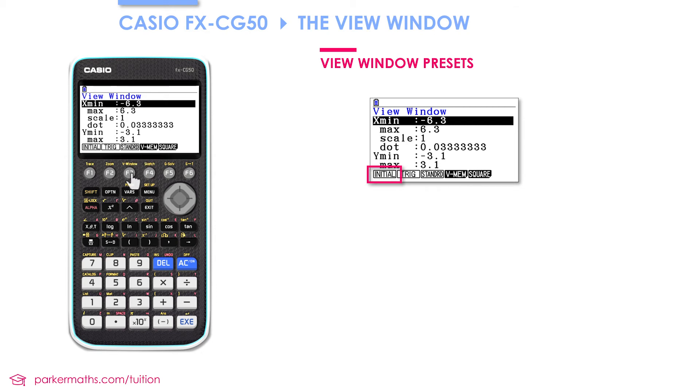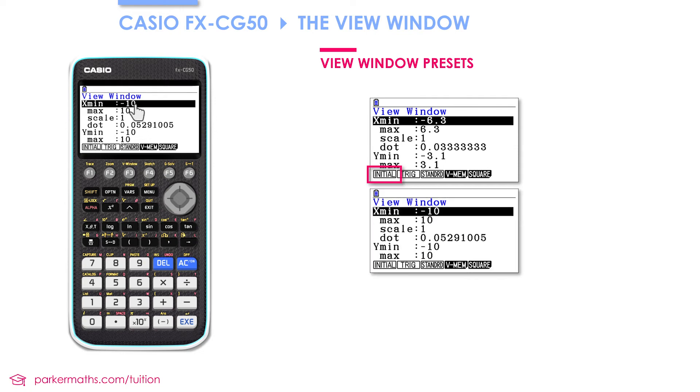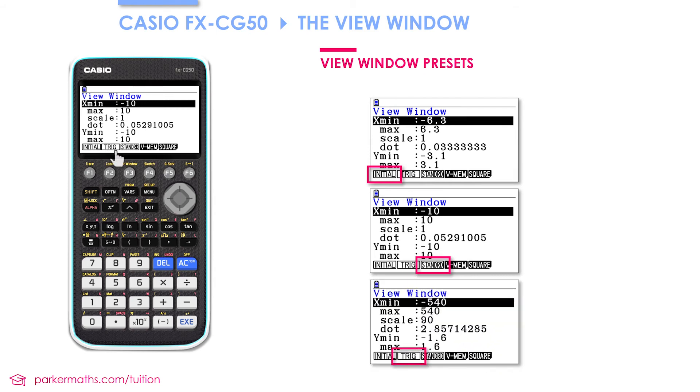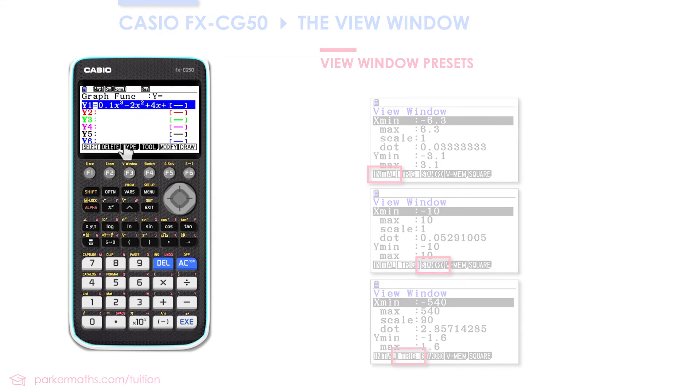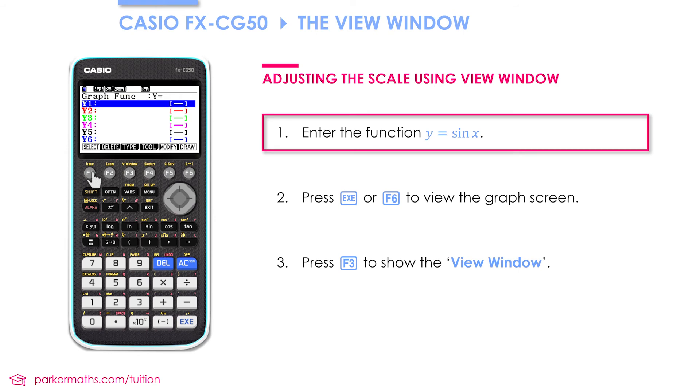And then there's a third one for trigonometry which we're going to have a look at for the next function. So let's exit the view window and I'm going to delete this function and replace it with the graph of y = sin x.